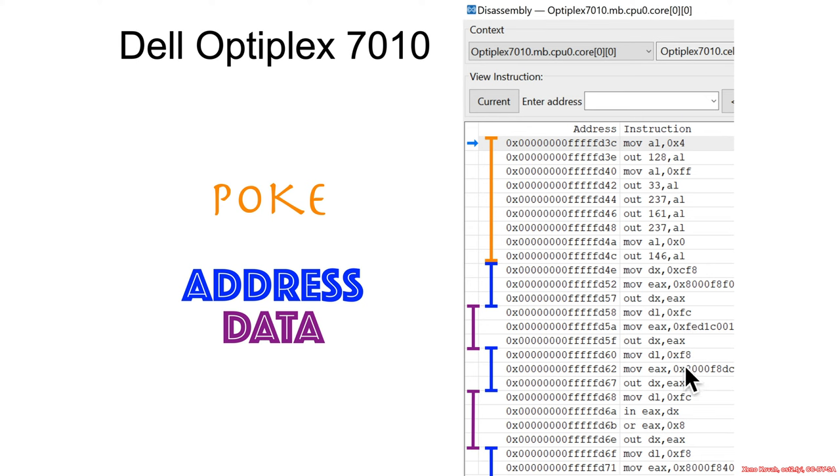Then it changes back to the other port, the address port. So this becomes CF8. Then it writes some address to that, and then it changes back to CFC, and then it reads in some data from there. It does an OR on it in order to set a bit, and then it writes that value back out to the same address that was already there. So that's an example of just some poke port I/O and some address/data port I/O all happening in the same general location.